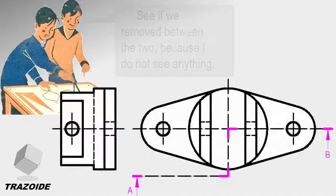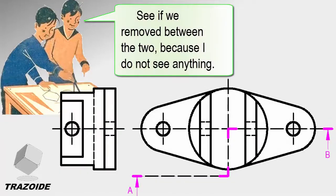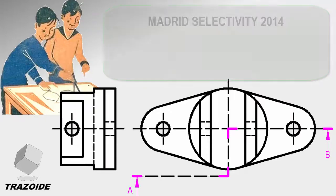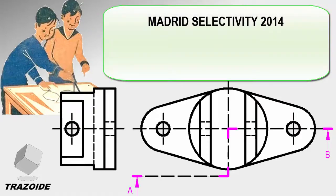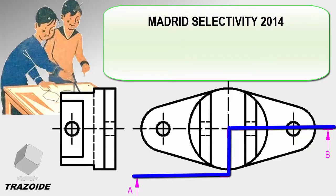Hi, I'm Antonio Castilla. We will solve one of the exercises from Selectivity Madrid 2014. We get the elevation and the right profile, and are requested to perform the cut tab and then draw views. We'll first do the cut and leave the dimensioning for another video.